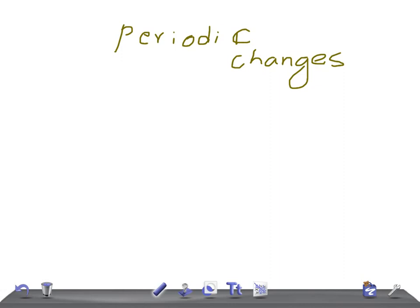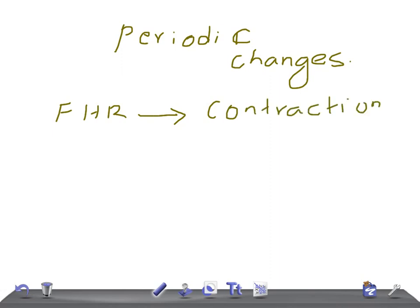What are periodic changes? They are usually apparent temporary variations of fetal heart rate in relation to uterine contraction. Whenever there's a uterine contraction, there's a change in the fetal heart rate. So when there is a contraction, there's a change — either it can give acceleration or it can give deceleration.